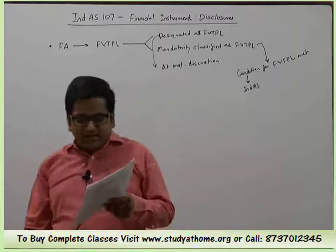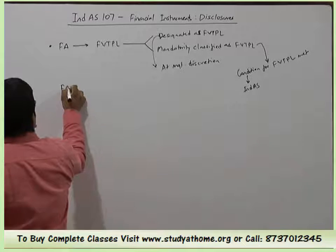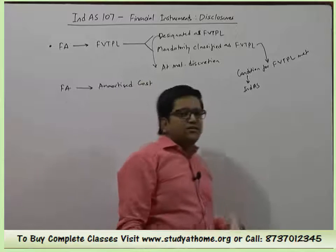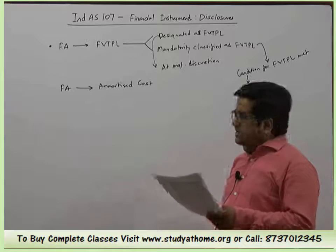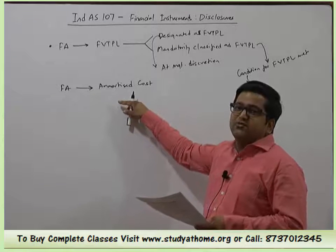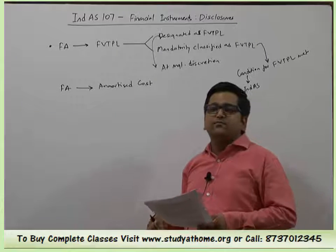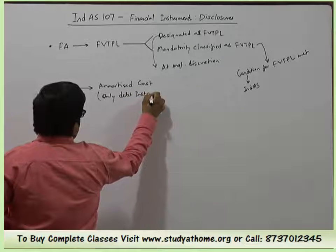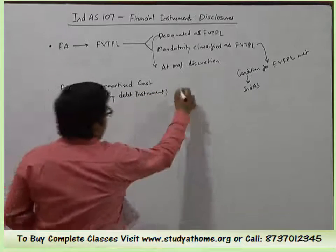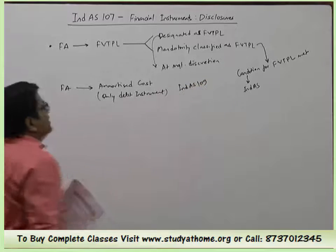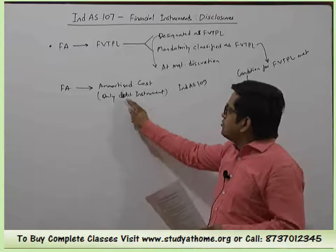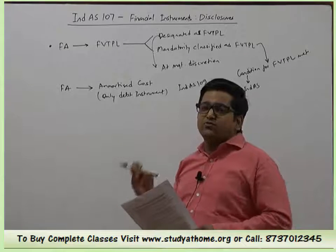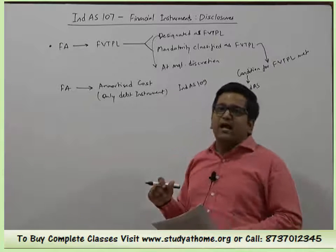Next, Financial Assets measured at Amortized Cost — disclose which financial assets are measured at amortized cost. Note that amortized cost valuation applies only to debt instruments, not equity instruments. If a financial asset is an equity instrument, classification is only into two categories: FVTPL and FVT OCI.